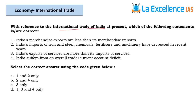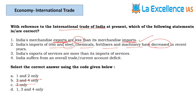The next question is about international trade in India. Statement 1 — India's merchandise exports are less than imports; yes, correct, eliminate other options checking consistency. Statement 2 — India's import of iron, steel, chemicals, fertilizers, machinery has decreased in recent years. As the economy grows industrial requirements increase, so iron and steel utilization increases — imports would not decrease. Statement 2 is eliminated. Answer is D.